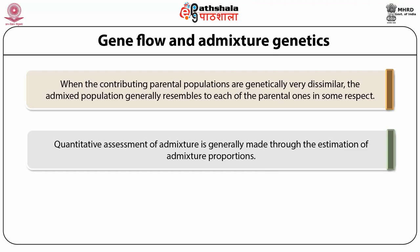Quantitative assessment of admixture is generally made through the estimation of admixture proportions. When a hybrid population consists of genes from p-parental groups, the proportional contributions of these ancestral groups in the total gene pool of the hybrid population are defined as admixture proportions. If the time depth of admixture is known, these proportional contributions can be converted into rates. For population genetic consideration, this conversion of proportions into rates is necessary in order to study the consequence of migration on the change of gene frequencies.